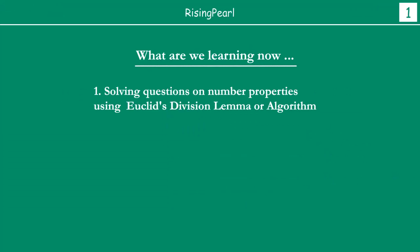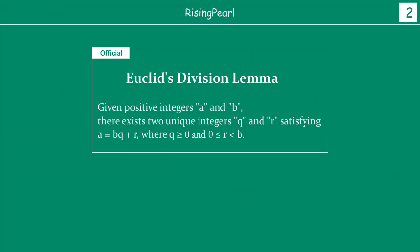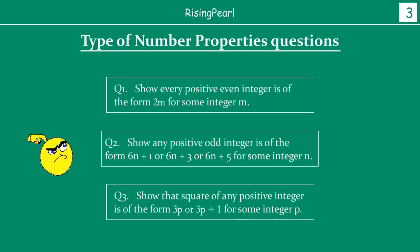Now let's zoom past some of the things that we have already covered — by now we know what is exactly meant by Euclid's division lemma. Let's get to the point where, like we talked about in the last video, there are different types of number property questions that you may be getting in your tests and exams. We did take a look at two particular types in our last video.